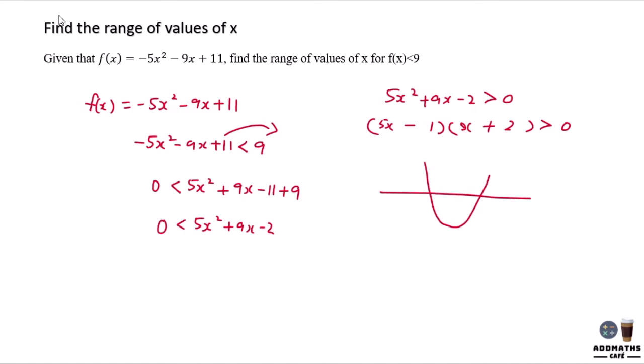Then sketch a graph. x + 2 will give you a negative 2 here. 5x - 1 will give you a 1 over 5 here. So if you can't see why is it 1 over 5, you can do one step by one step by this method.